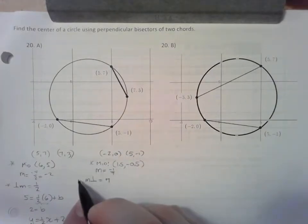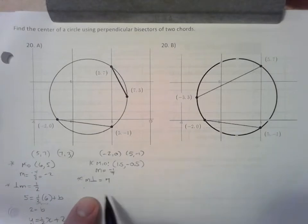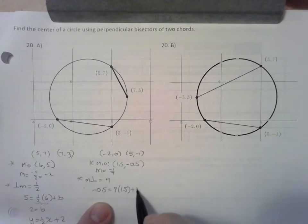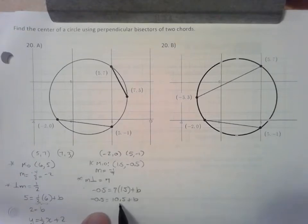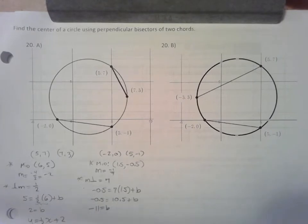So I want to use this point and this slope to build my line. I'm going to use Y equals MX plus B. Negative 0.5 equals 10.5 plus B. Let's find B. Let's subtract 10.5 from both sides. Negative 11 equals B. Y equals 7X minus 11.